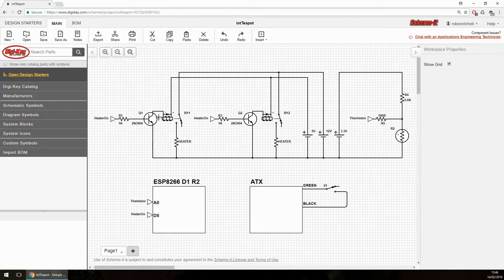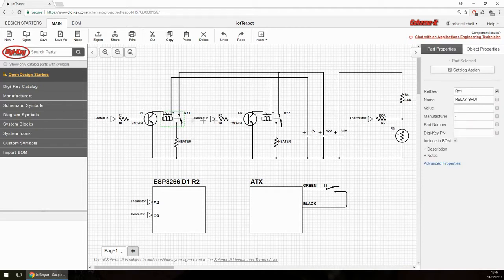So we have two relays here, RY1 and RY2, and these control the heater elements and both of these are controlled by two different transistors which are both then controlled by the same pin on the ESP8266 D1R2 board. When the ESP8266 turns its heater on output, transistors Q1 and Q2 turn on. When they do, the relay coils will energize and this will cause the relays to switch which will in turn turn on the heaters.